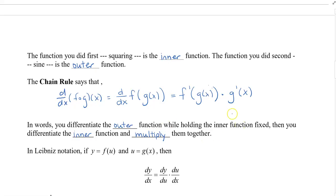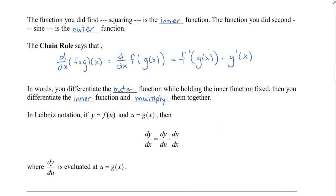It's kind of like peeling the outer function like an onion — you have the leftover inside, and then we do something to the inside and put them together. In Leibniz notation, if y equals f of u and u equals g of x, then dy/dx equals dy/du times du/dx, where dy/du is evaluated at u equal to g of x.